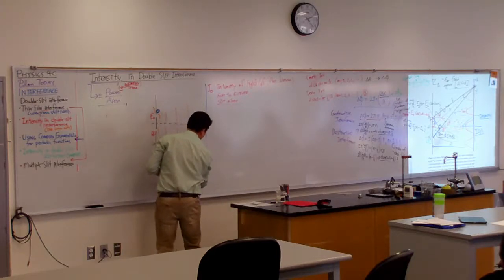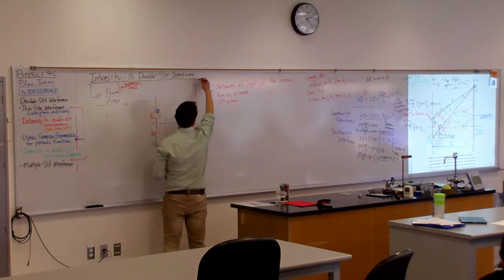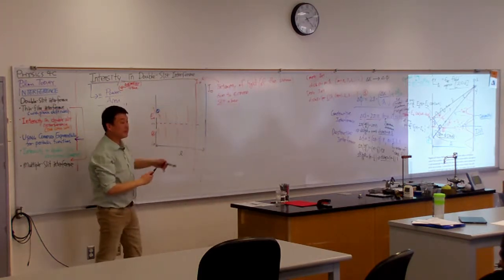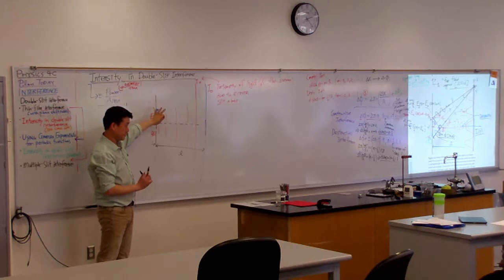So this is the sort of baseline intensity. This intensity I0 is this intensity. That's what intensity you would have with a single slit and nothing else. Good?